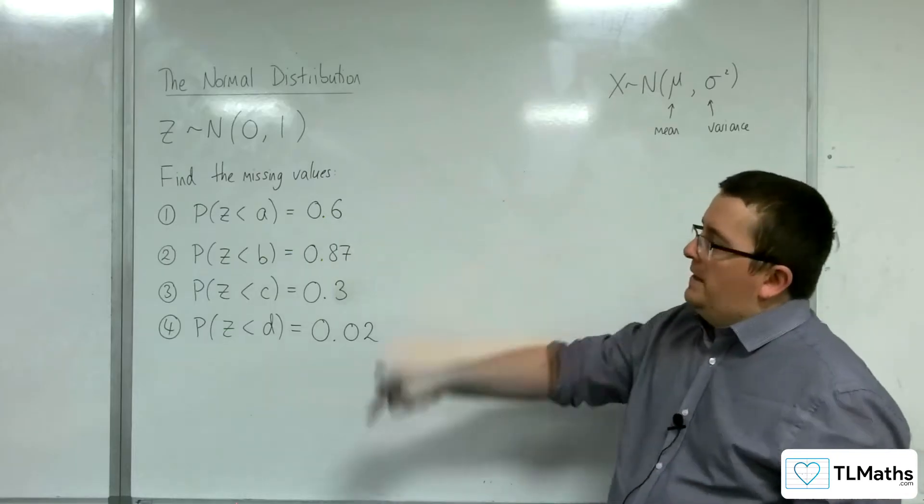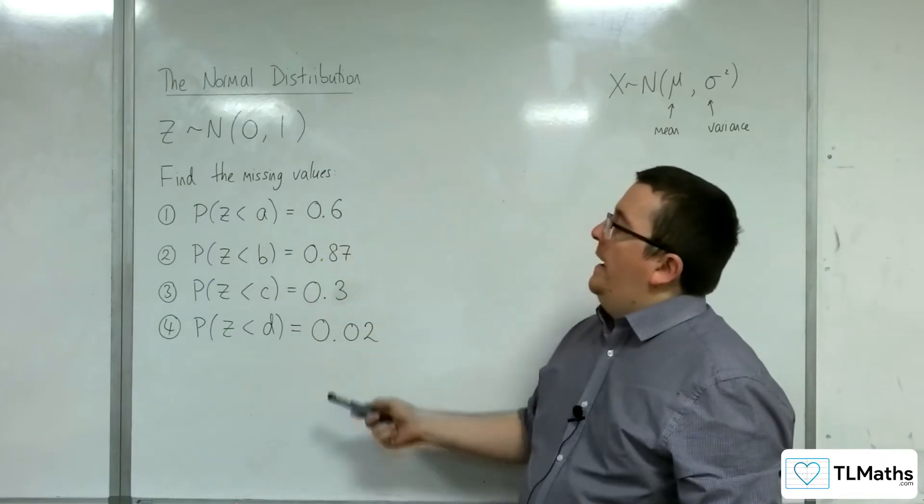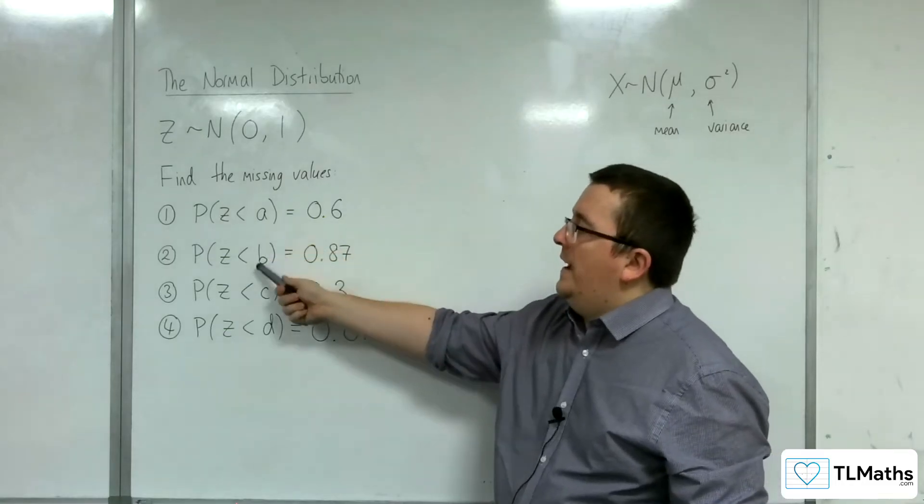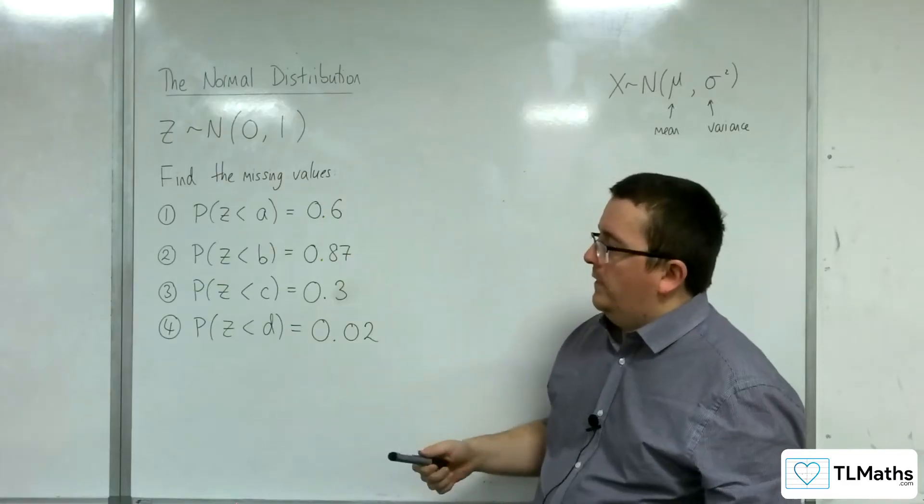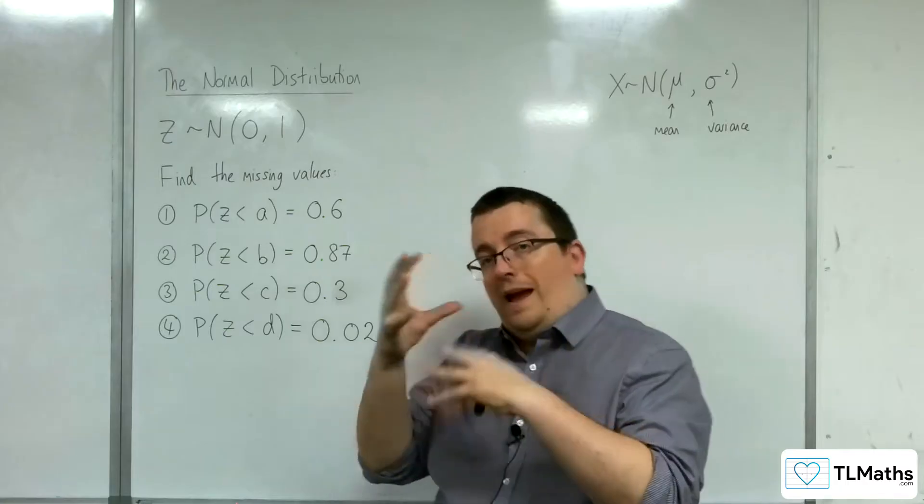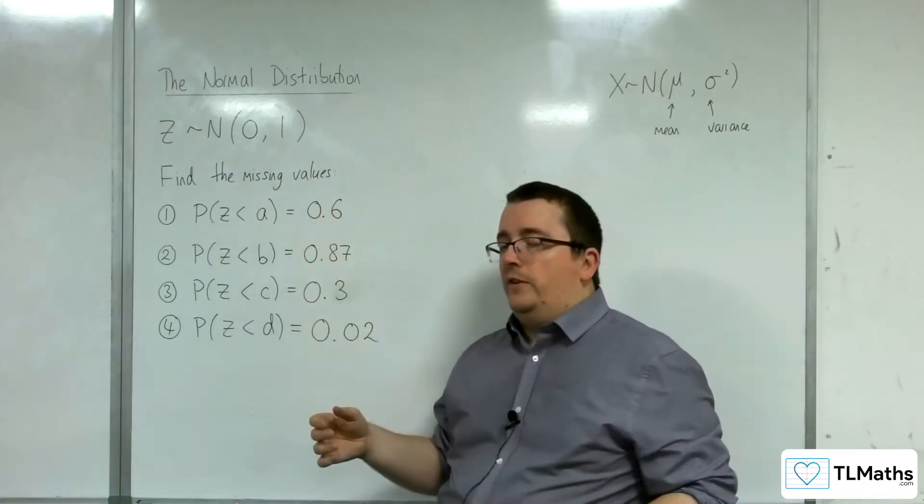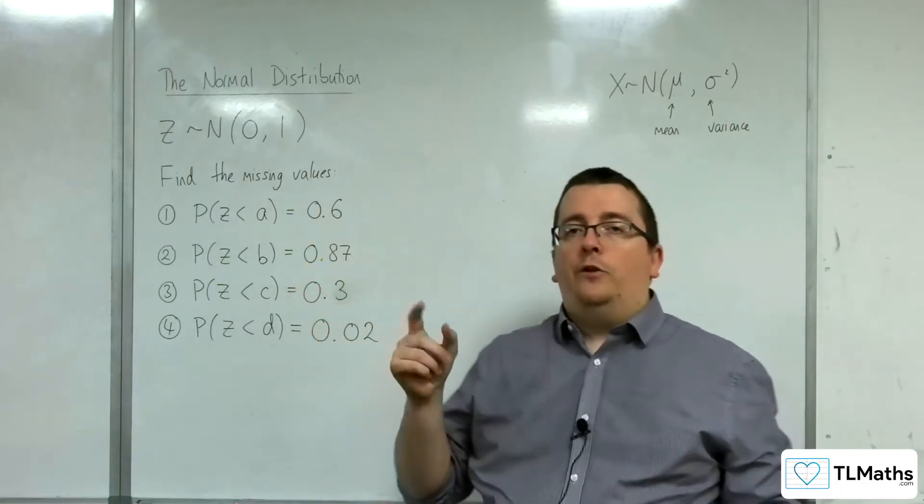So, we're going back to work with the standard normal distribution, and we've got four values to find: A, B, C, and D. And I'm going to show you how we're going to interpret what these things mean, how we're going to work them out using our tables.